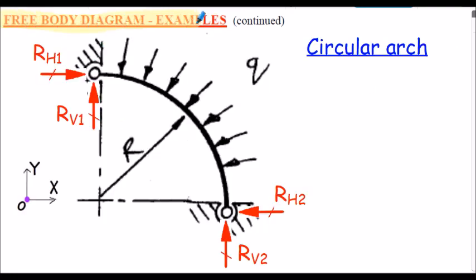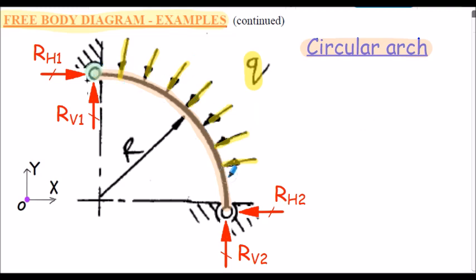Here's a circular arch with externally applied pressure loading simulated by a uniformly distributed load on the surface. Again we're assuming pinned ends, so the reactions are vertical reactions RV1 and RV2 at each end and horizontal reactions RH1 and RH2. That's a circular arch under applied pressure simulated by a uniformly distributed load.